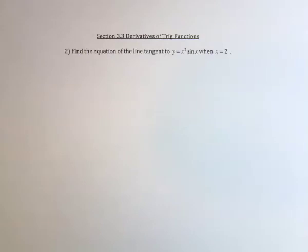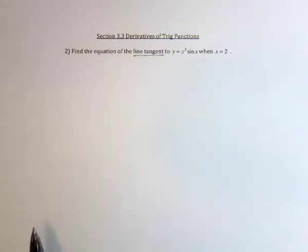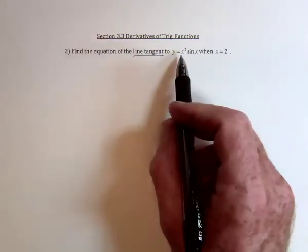To find the equation of a tangent line, the first thing we need to do is find the slope of the tangent line, which means find the derivative of this function.